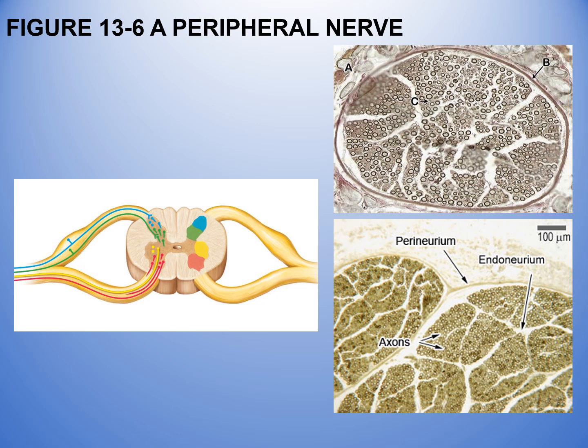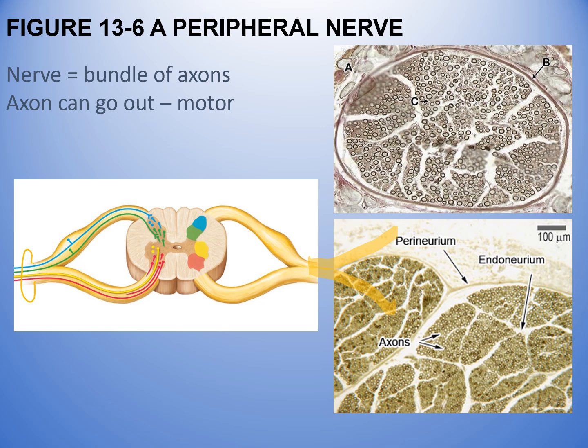Let's draw some rami. Rami leave the spinal column and travel out into the body, eventually becoming a peripheral nerve. For example, if we were to sever your arm and find the ulnar nerve, we would call it a peripheral nerve. Your sciatic nerve is also a peripheral nerve. A nerve is a bundle of axons — a large amount of neurons bundled together, especially in a spinal nerve.